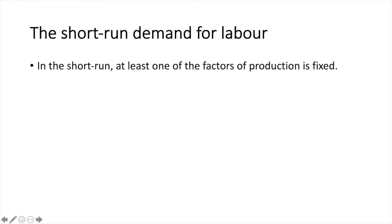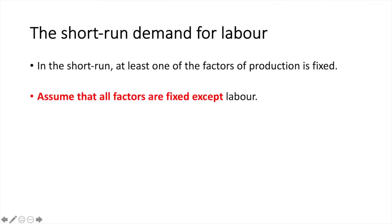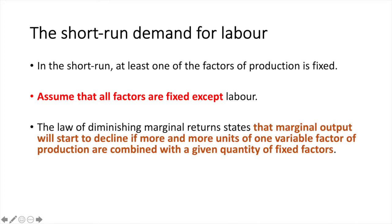Before we begin, we should establish our assumptions. When we discuss the marginal product of labour, we are discussing the short run. In the short run, at least one of the factors of production is fixed. Assume that all factors are fixed except labour. Remember what the law of diminishing marginal returns states: that marginal output will start to decline if more and more units of one variable factor of production are combined with a given quantity of fixed factors.